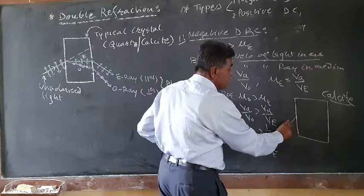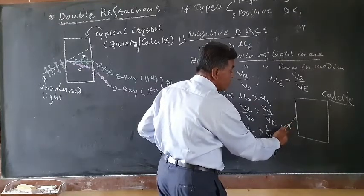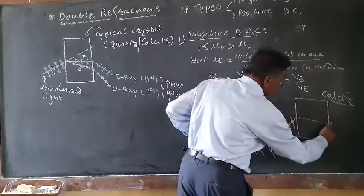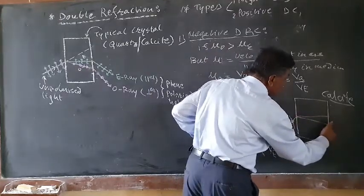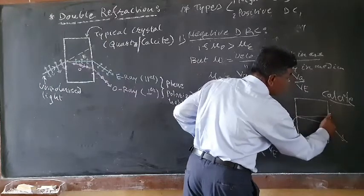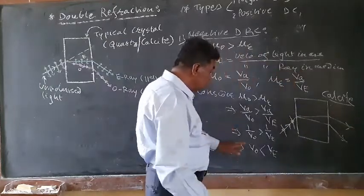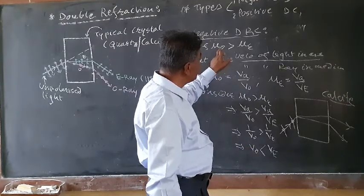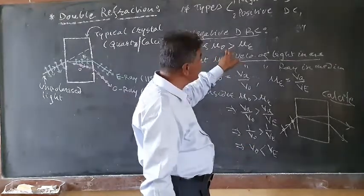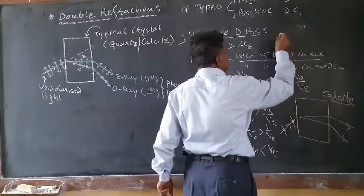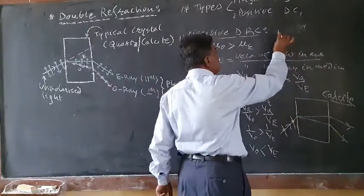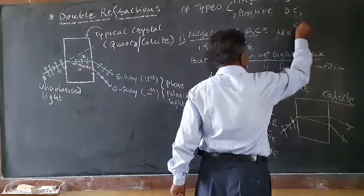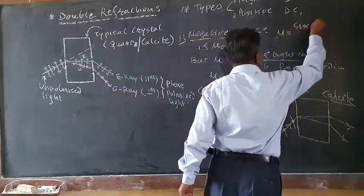When unpolarized light — represented by line and dot together — is incident on the calcite crystal, it breaks into two refracted beams. The refractive index of the O-ray is greater than the refractive index of the E-ray. Practically, the refractive index can be calculated using the formula: μ = sin((A + δ_m)/2) / sin(A/2), where A is the prism angle and δ_m is the angle of minimum deviation.